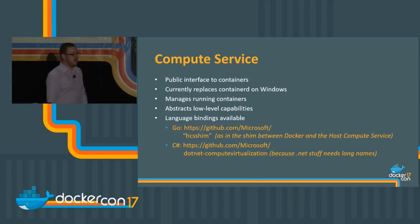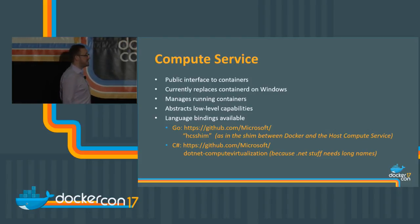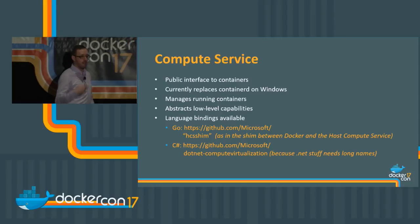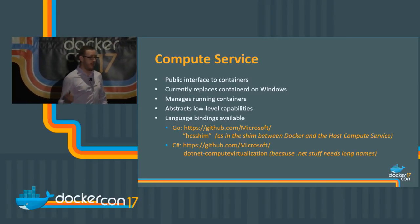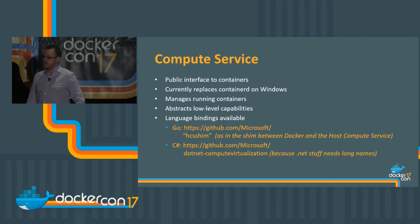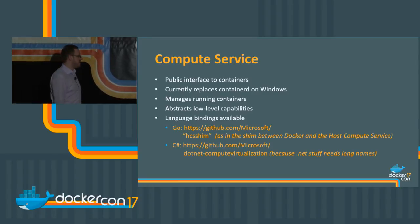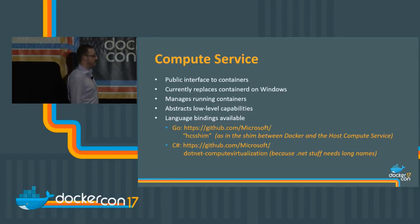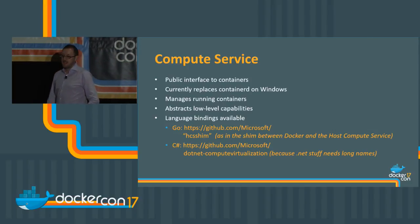We also have a host networking service that Dinesh will talk about, responsible for networking. These are abstractions to low-level capabilities — we call the host compute service and say start a container, we don't go create a job object and all the pieces; we give it one definition. We have two language bindings we maintain that are open source: the HCS shim, written in Go, vendored in as a library, and a C# version called .NET Compute Virtualization.